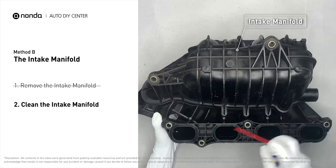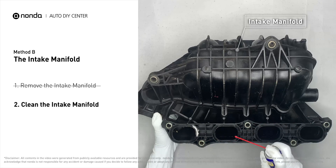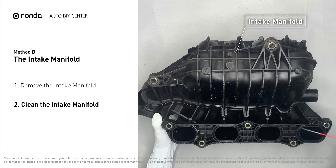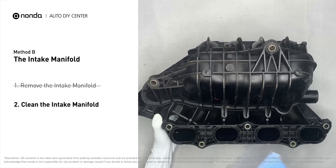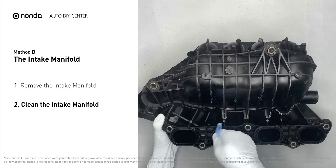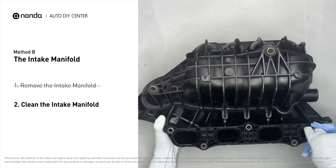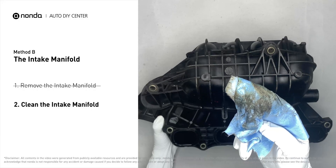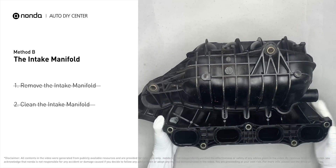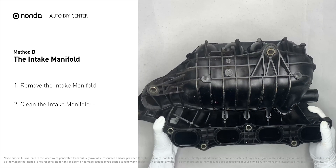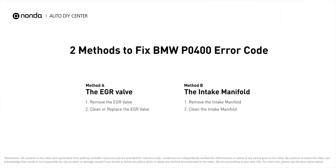Use the WD-40 cleaner to clean up the crud inside the intake manifold and wipe it well to make sure all the carbon buildup is removed. Reinstall the intake manifold back after the cleaned intake manifold has dried. So here are two of the most practical solutions to fix BMW's P0400 error code.